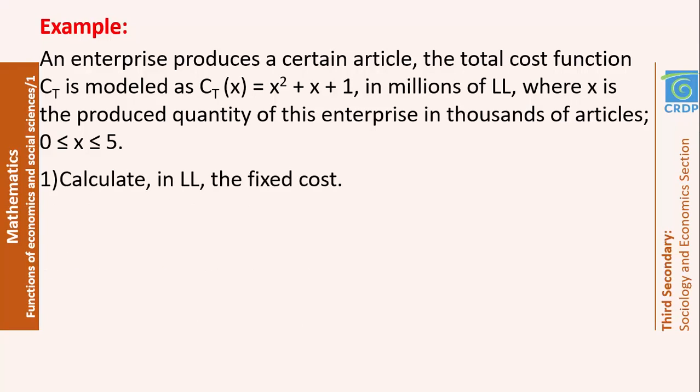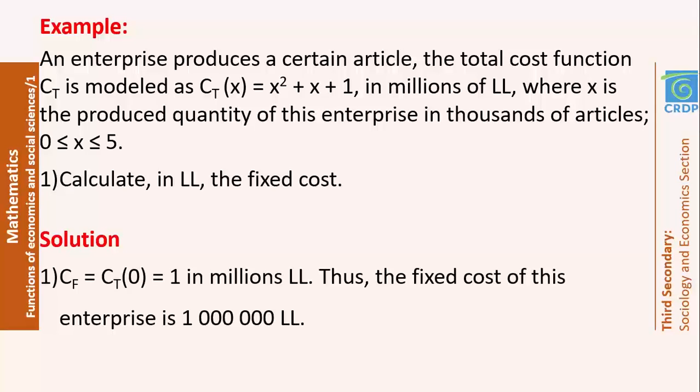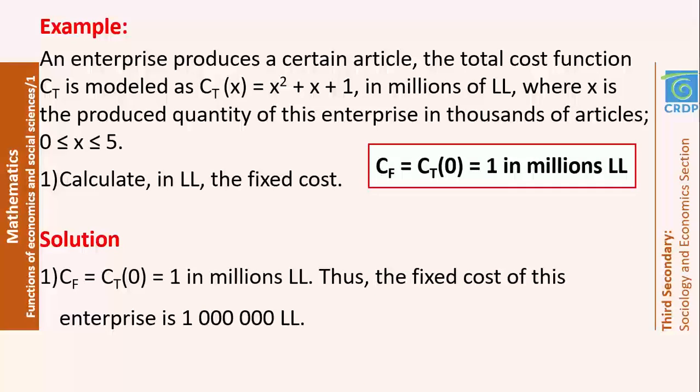In the first question, calculate in Lebanese lira the fixed cost. To find the fixed cost, we use the total cost function and replace x by 0, finding the cost when no items are produced. This gives 1 million Lebanese lira. So, the fixed cost of this enterprise is 1 million Lebanese lira.